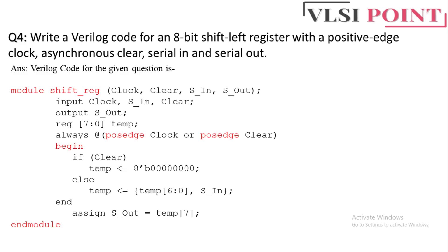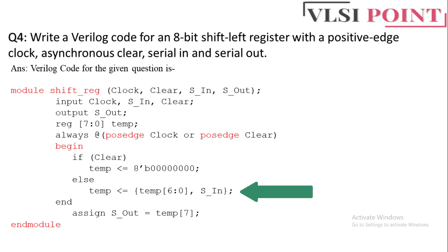In the begin-end block: if clear, assign 8'b0 to the temp register; otherwise, assign {temp[6:0], s_in} to temp. For an 8-bit shift left register, data shifts left one bit at a time, and the output is the leftmost bit — this is why temp[7] is assigned to s_out. The curly braces represent the concatenation operator: s_in is inserted from the right and the remaining 7 bits of temp are kept, performing the left shift.